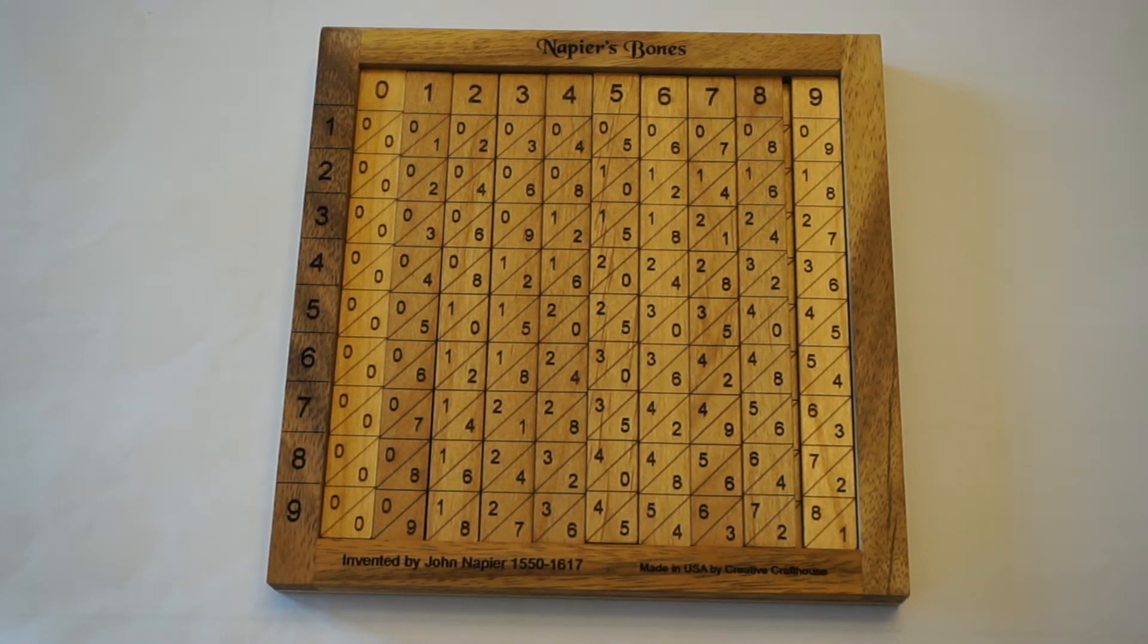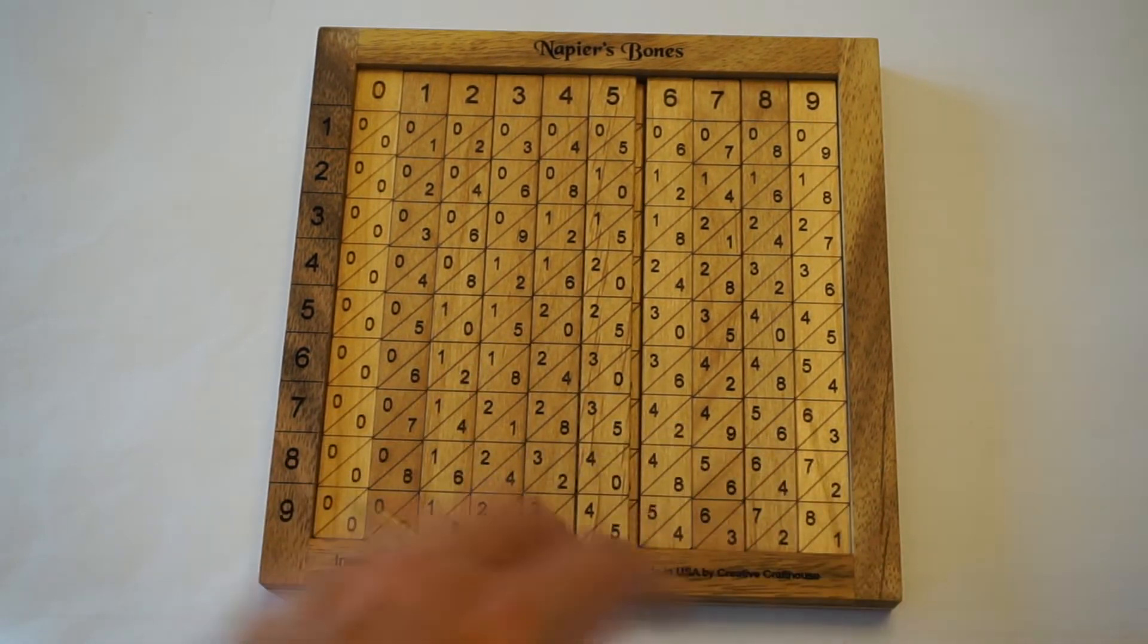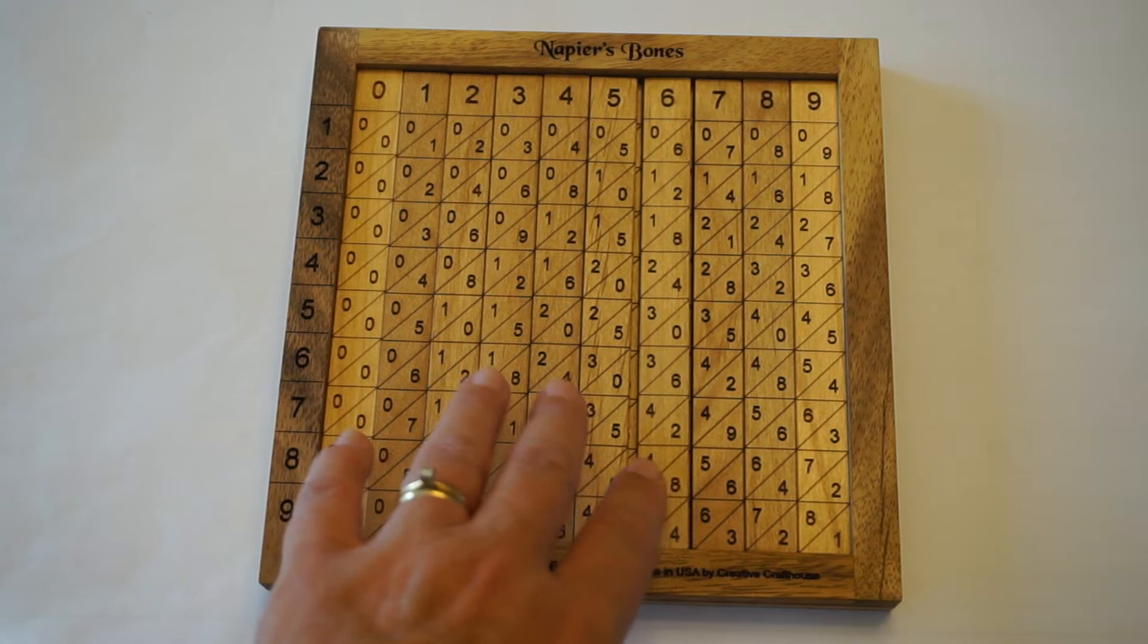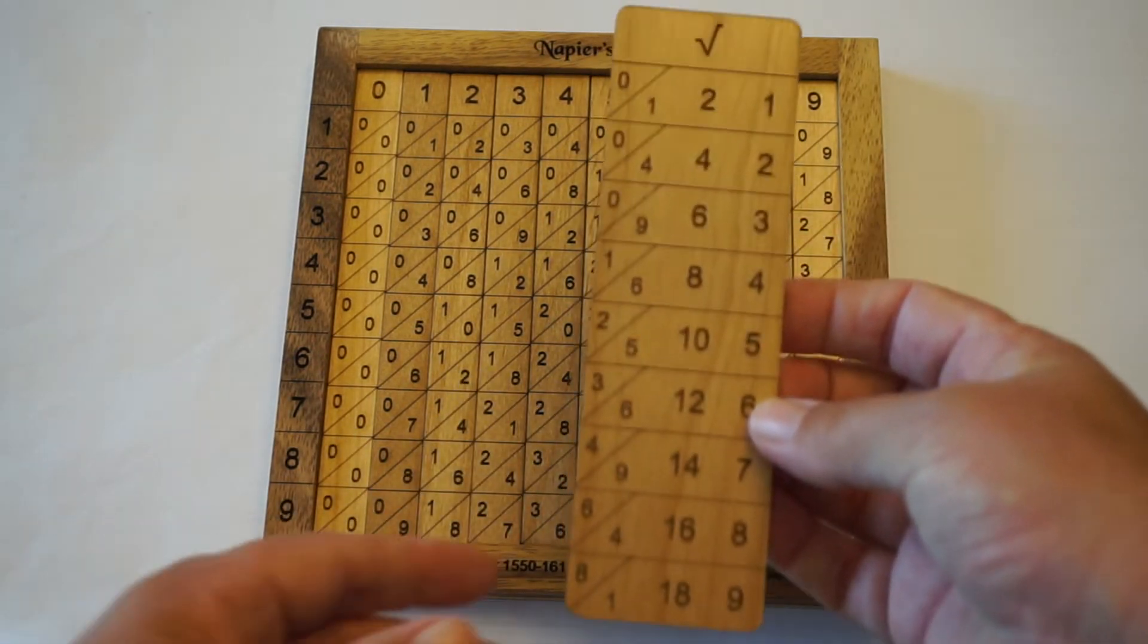This video consists of one quick example of taking a square root with Napier's bones. In order to do this, we will need an extra bone or extra rod that's a little bit wider than the others, and that is the square root rod.